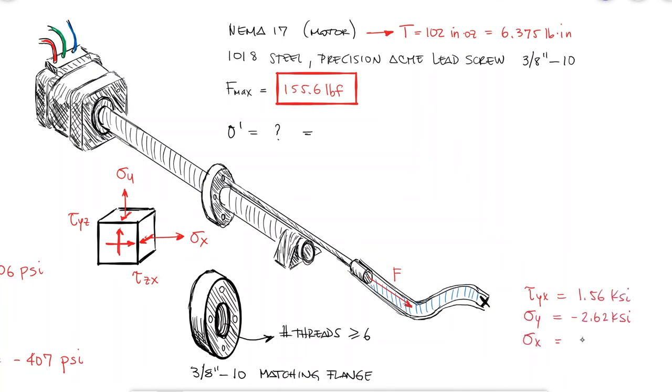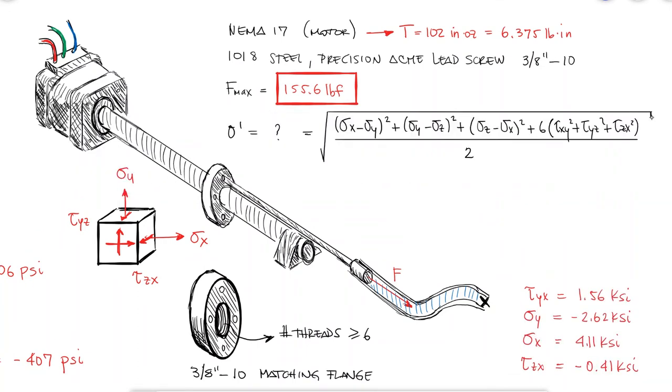Using these values in the expression that we used for the von Mises stress in the main video, we find that the von Mises stress for the stress element in the critical location, which is at the apex between the first thread and the root of the screw, is equal to 6.5 ksi.